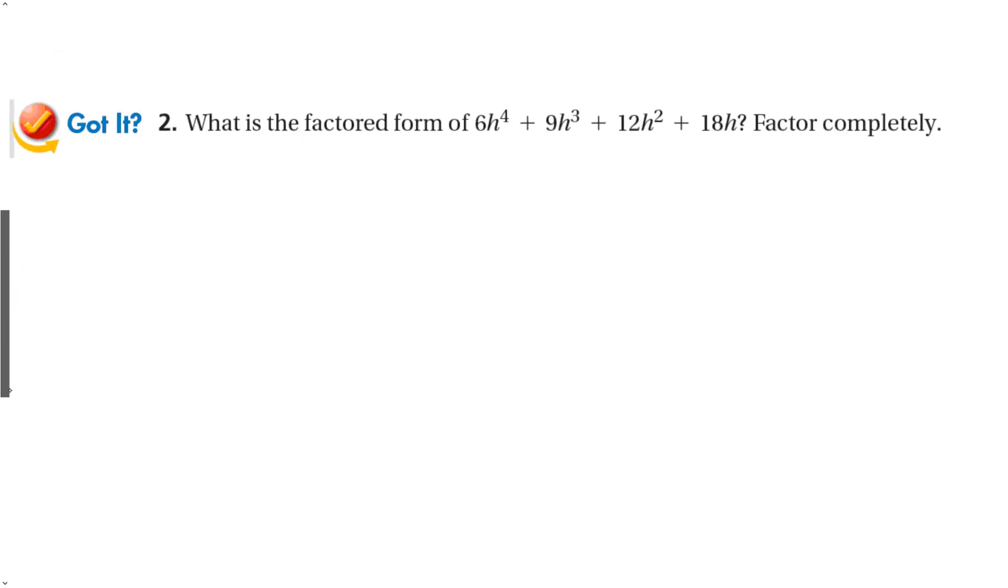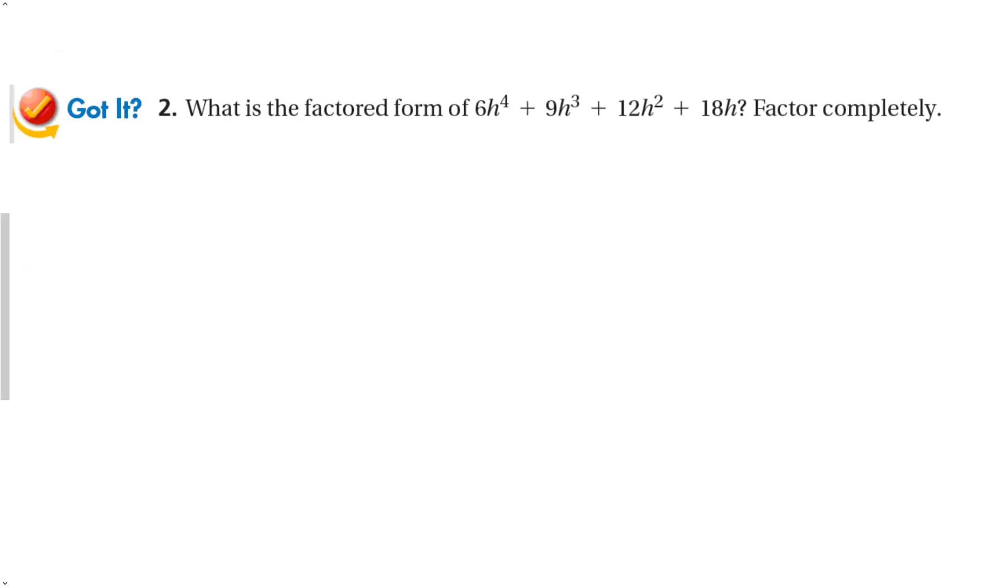Let's try another one. Factored form of 6h to the fourth plus 9h to the third plus 12h squared plus 18h. What do they all have in common? Well, unfortunately, the 9 doesn't have a factor of 6, but it looks like they all have a factor of 3 and an h. When I factor that out, I get 2h to the third plus 3h squared plus 4h plus 6.